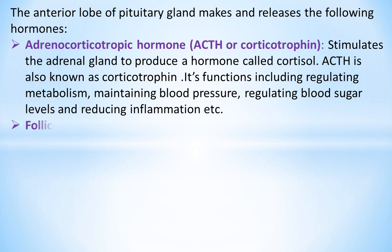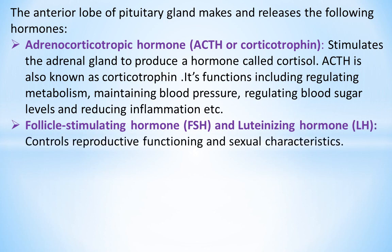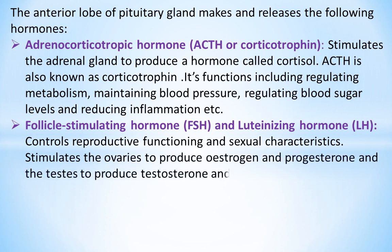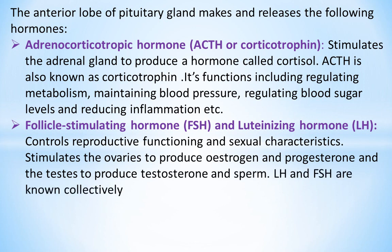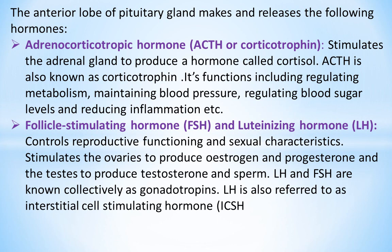Follicle-stimulating hormone (FSH) and luteinizing hormone (LH) control reproductive functioning and sexual characteristics. They stimulate the ovaries to produce estrogen and progesterone, and the testes to produce testosterone and sperm. LH and FSH are known collectively as gonadotropins. LH is also referred to as interstitial cell-stimulating hormone (ICSH) in males.